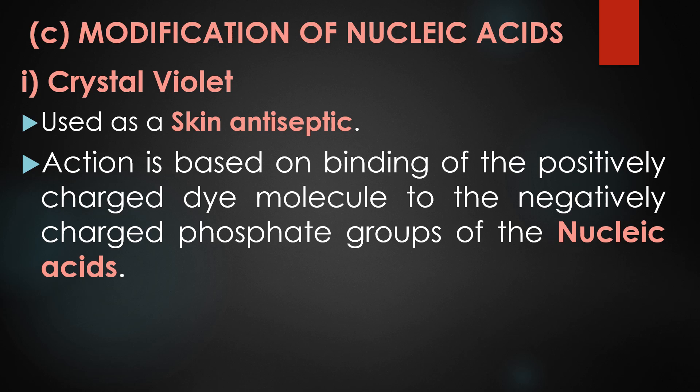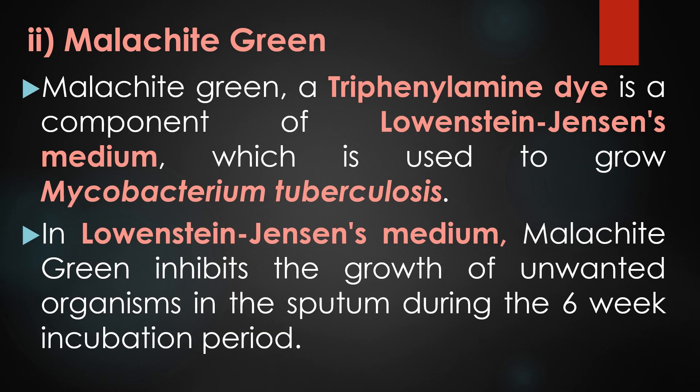This binding kills the microorganisms. The second dye involved in the modification of nucleic acids is malachite green, a triphenylamine dye. Like crystal violet, malachite green is a component of Löwenstein–Jensen medium, which is used to grow Mycobacterium tuberculosis, the organism responsible for causing tuberculosis in humans. The selective medium for Mycobacterium tuberculosis is Löwenstein–Jensen medium.